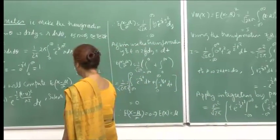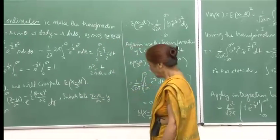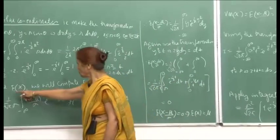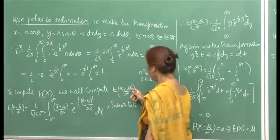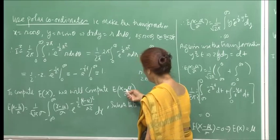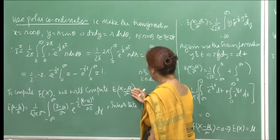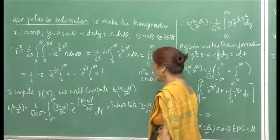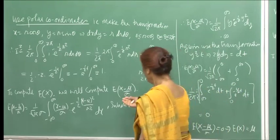Now, the second step is to compute the expectation. Instead of computing E[X], we will compute the expectation of (x − μ)/σ, because that will be easier. We know that the expectation of x is actually μ. So we will show that this expectation is 0, and therefore get the answer immediately.